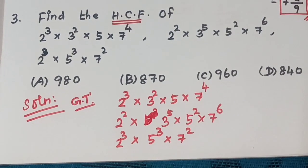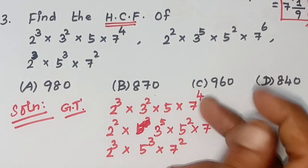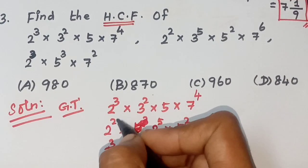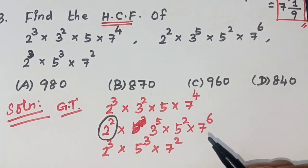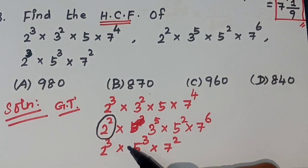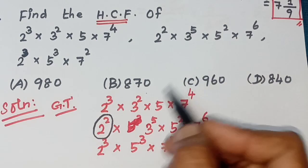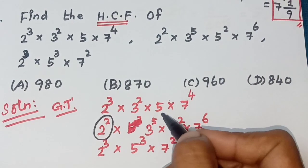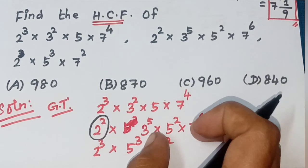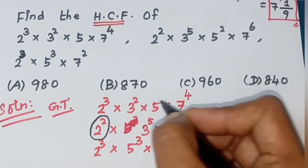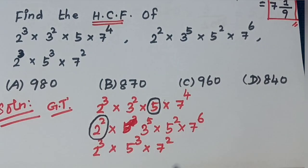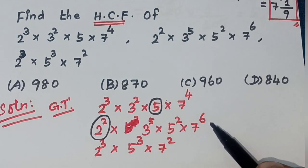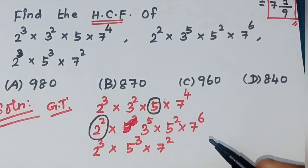HCF means highest common factor. For powers of 2: 2³, 2², 2³ — common is 2². For powers of 3: 3², 3⁵, not present in third — skip 3. For powers of 5: 5¹, 5², 5³ — take 5¹. For powers of 7: 7⁴, 7⁶, 7² — common is 7².